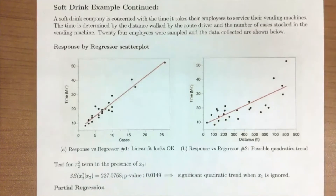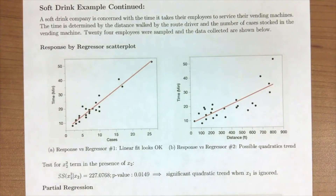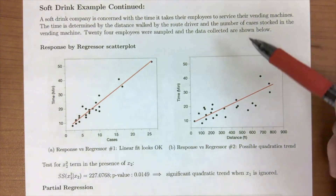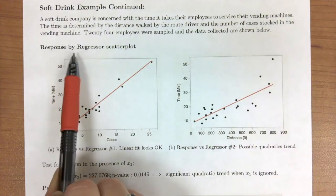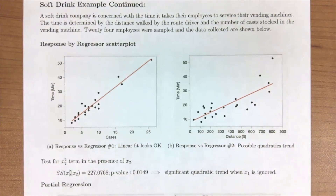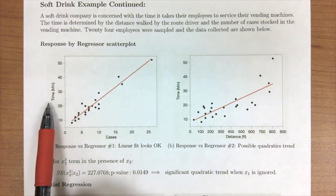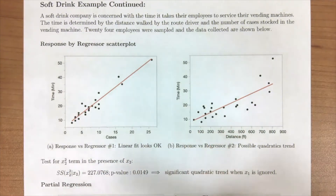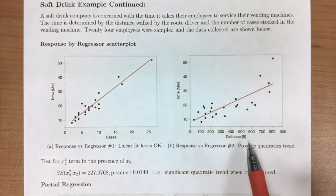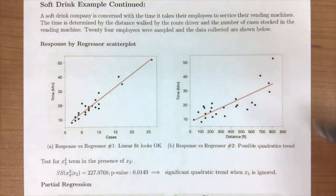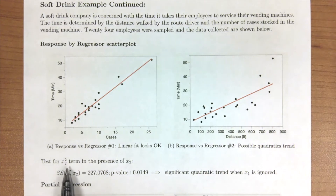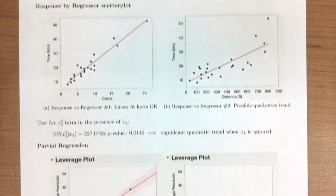Now we're going to move over to our soda drink example and do the same process. We have 24 employees, two regressors — distance and number of cases — and our response is time. These two plots are just plotting the response by the regressor, not partial plots yet. Looking at number of cases and time, we probably see a linear fit. For distance on x and time on y, I see a slight possible quadratic trend, so you would probably want to test for a quadratic term in the presence of x2.